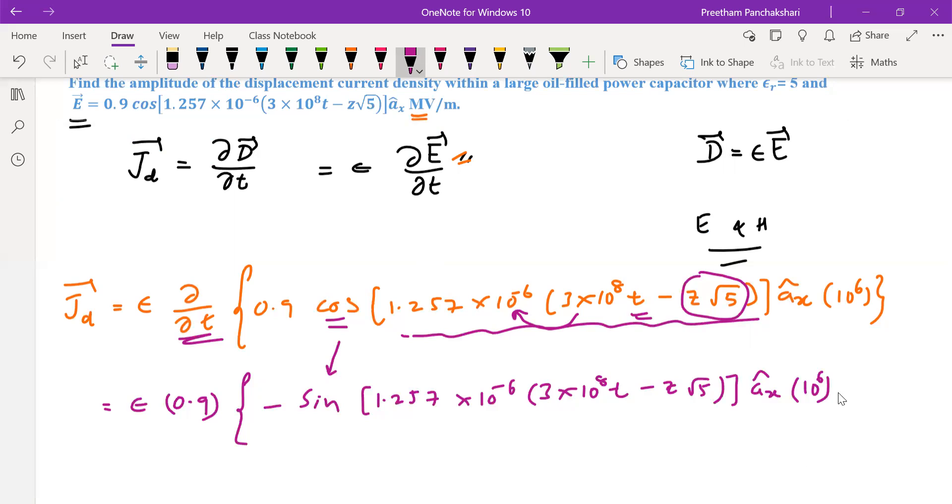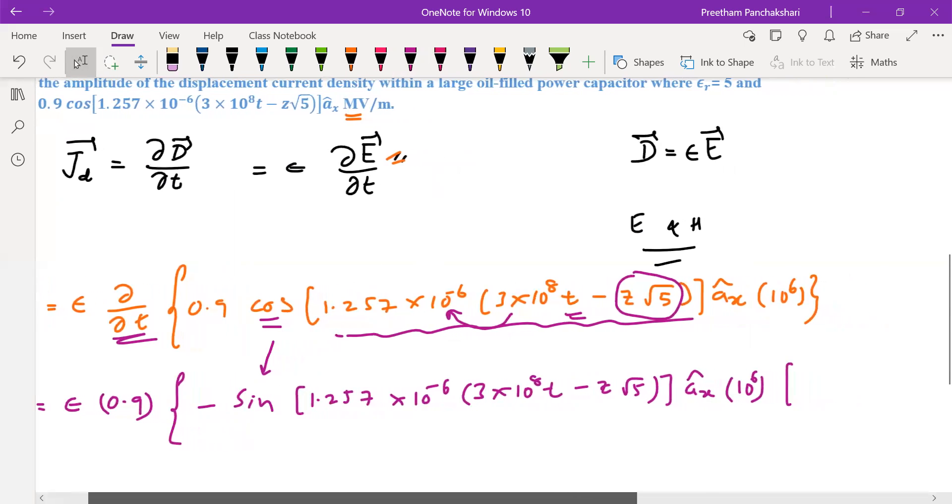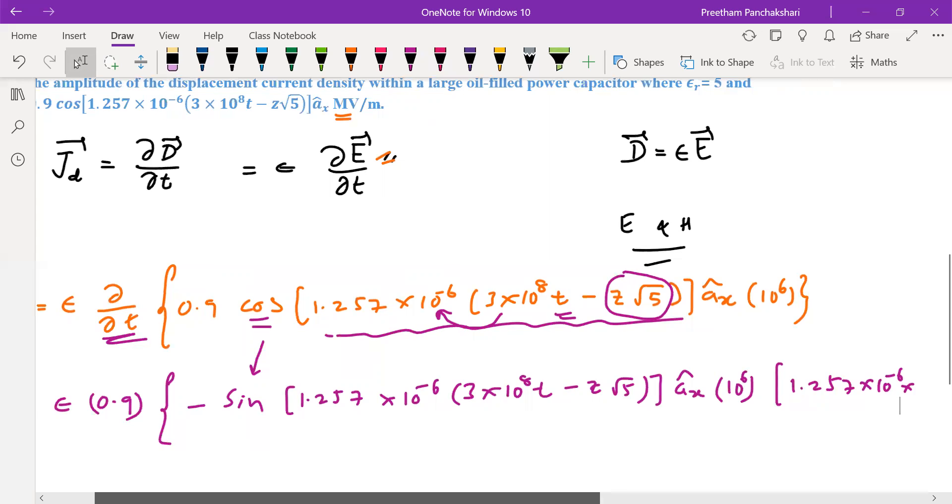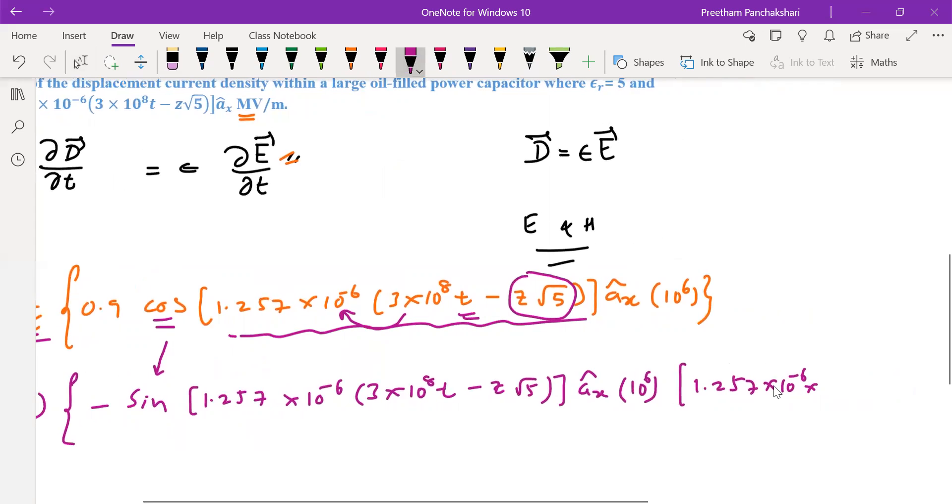So 1.257×10⁻⁶ into 3×10⁸. So this constant is multiplying both of them. Differentiation of t is 1. So the product of these is given here.